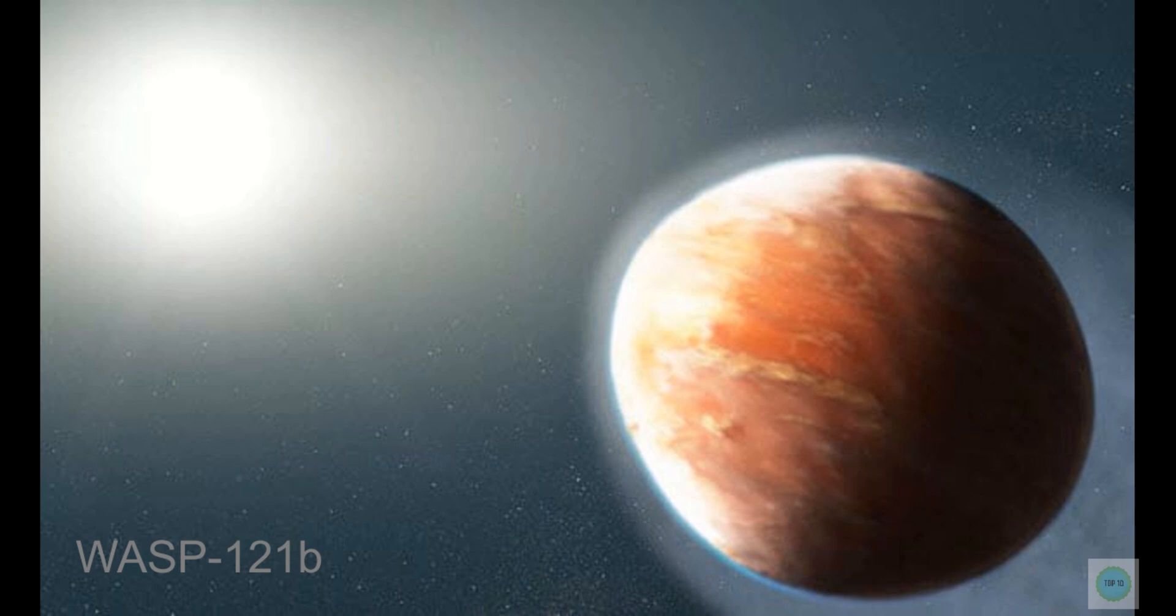Number 7 is WASP-121b. WASP-121b is one strange exoplanet. To begin, it isn't round but looks more like a football. We mean American football and not the more popular one that Americans call soccer. In any case, the shape isn't what makes WASP-121b lethal. Instead, the issue is the exoplanet's proximity to its star.